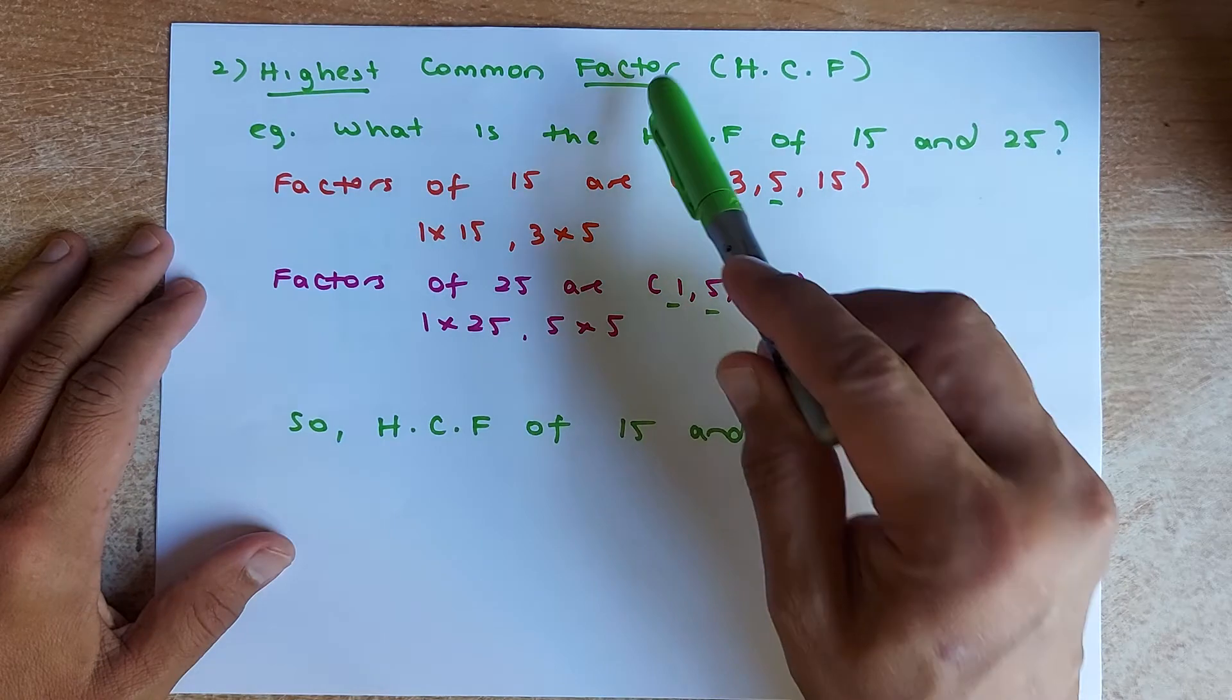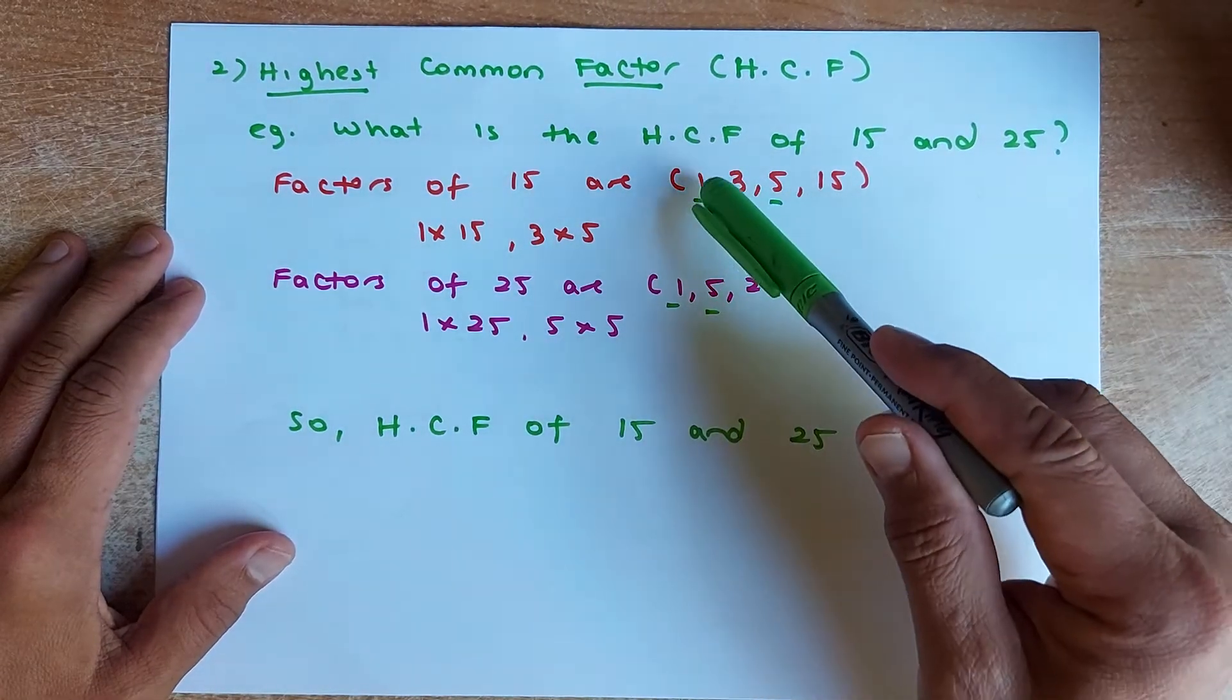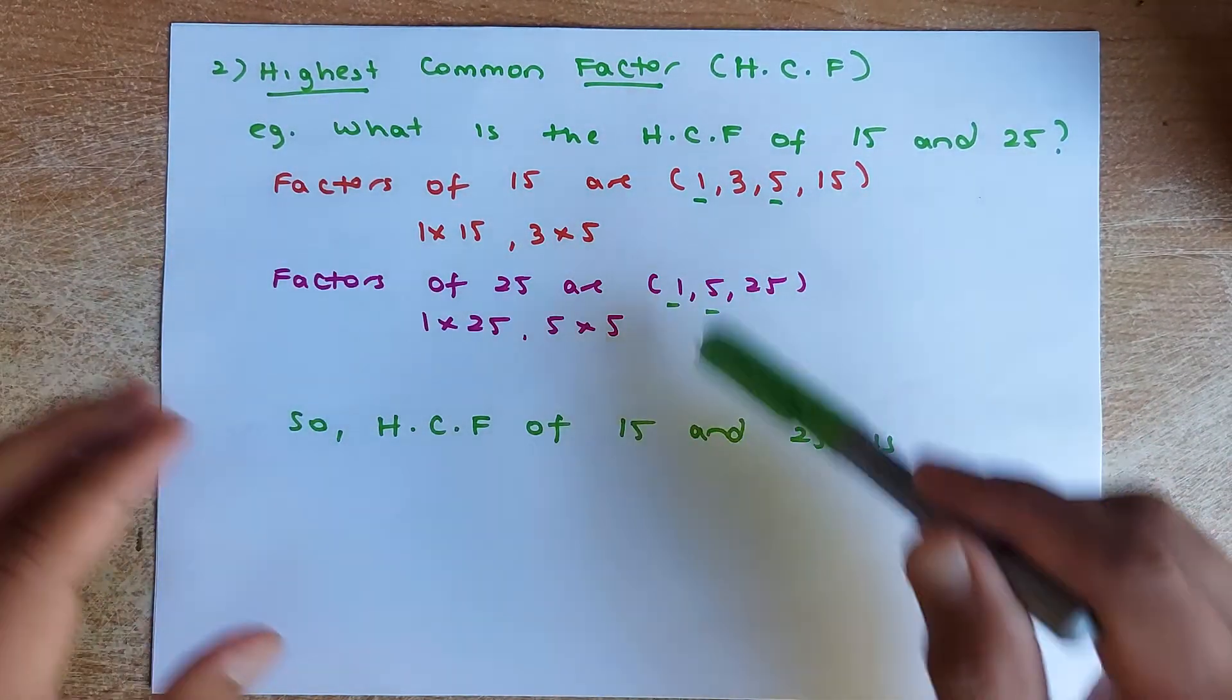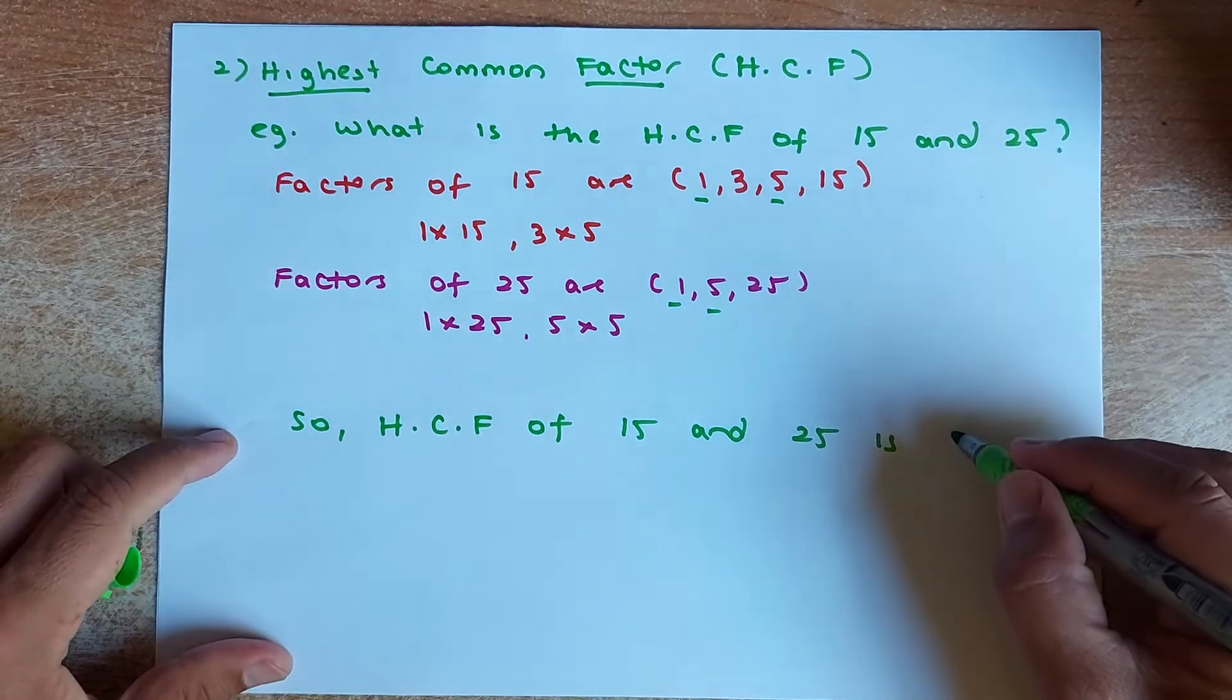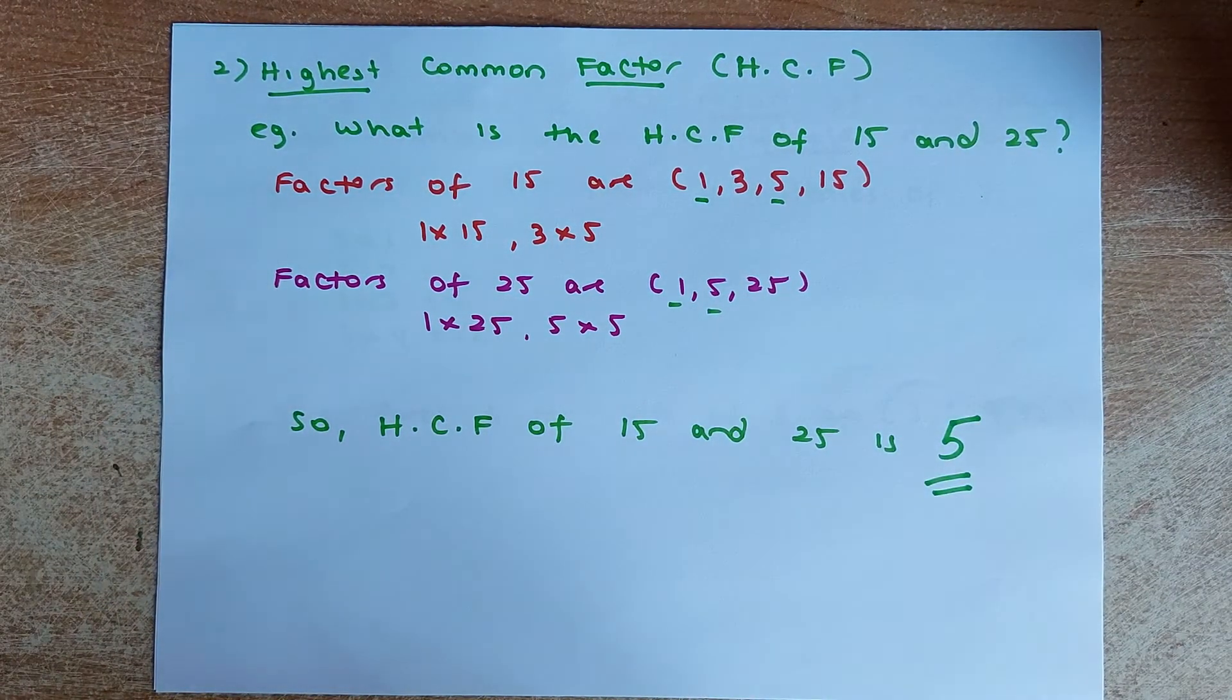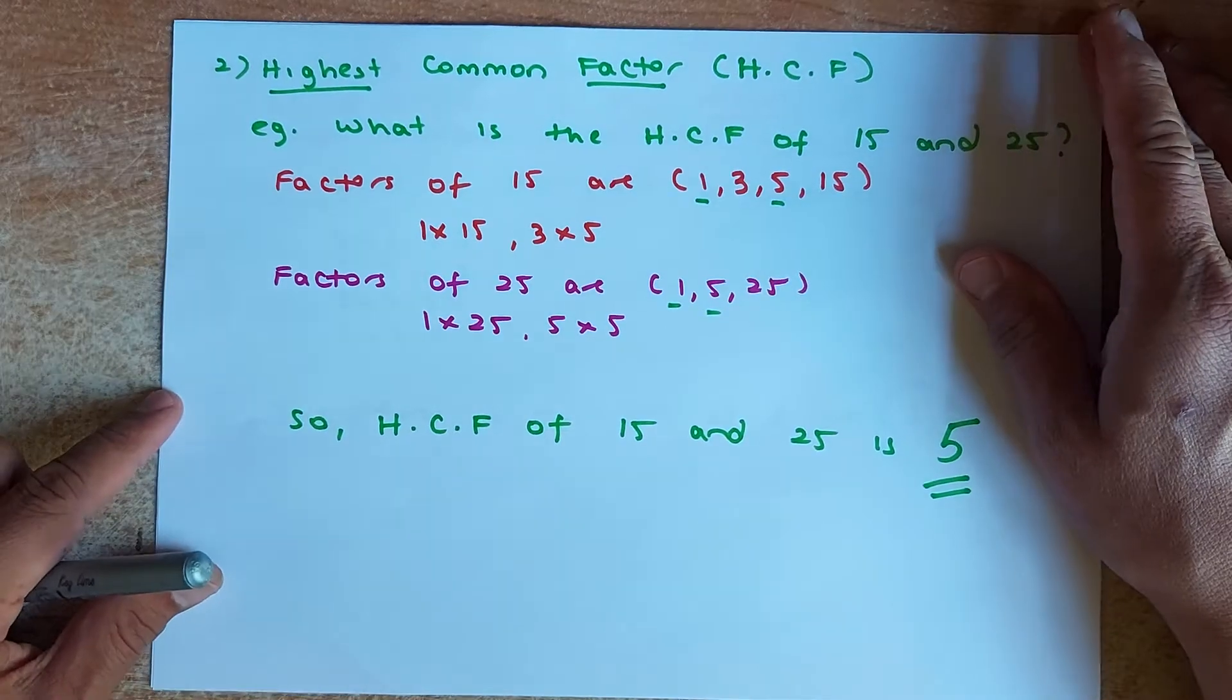So the highest common factor, the common factor is 1 and 5. So the highest number that's common is 5, so the answer is going to be 5. And that is how you calculate highest common factor.